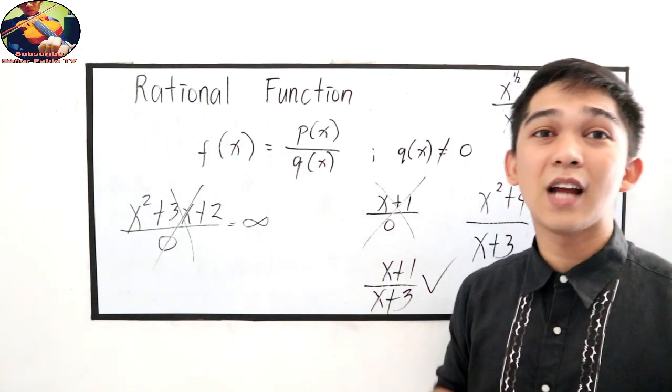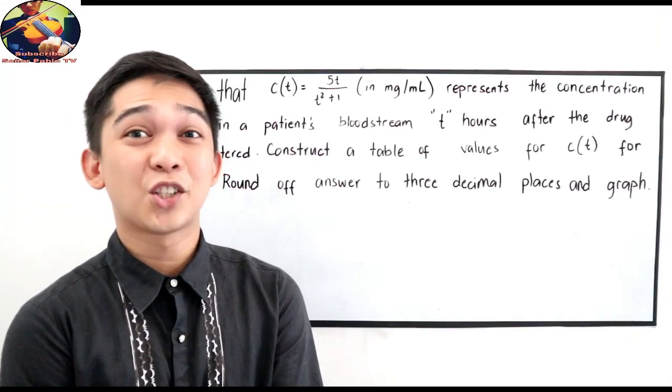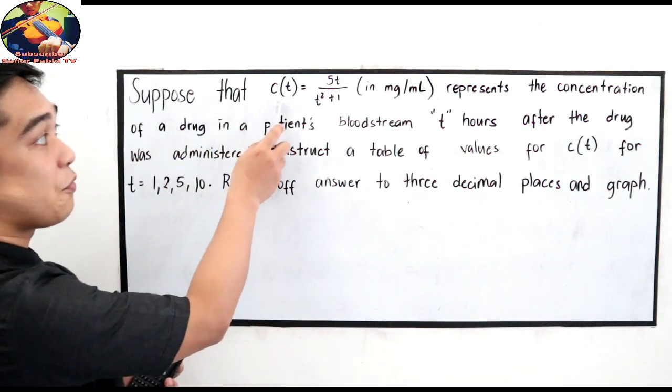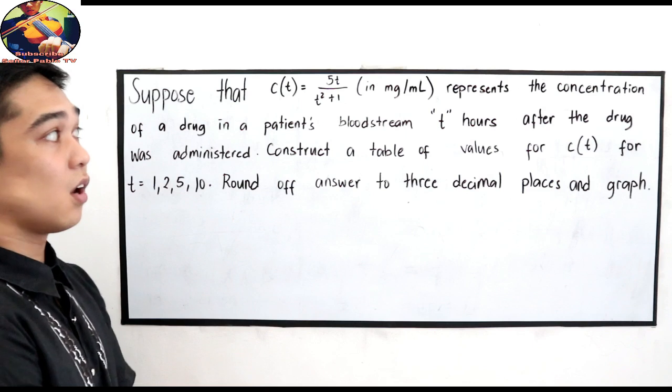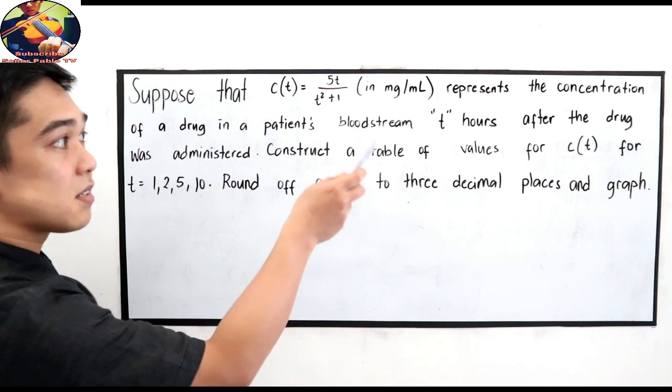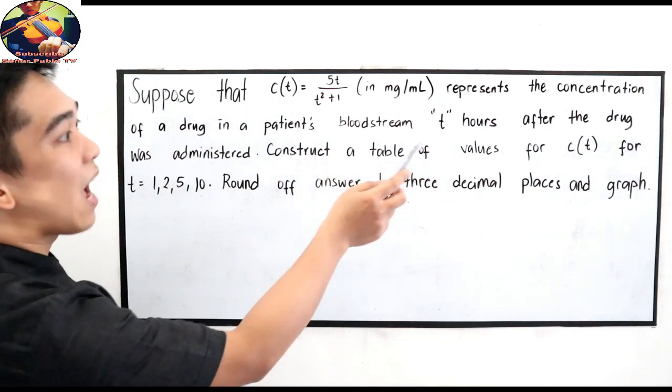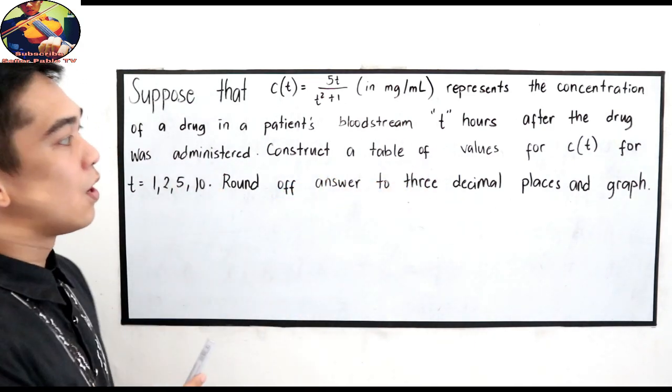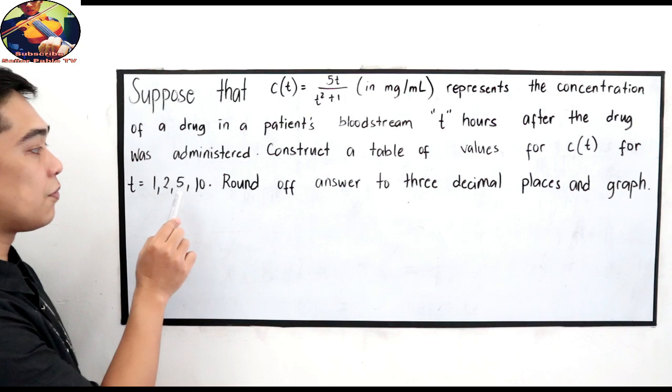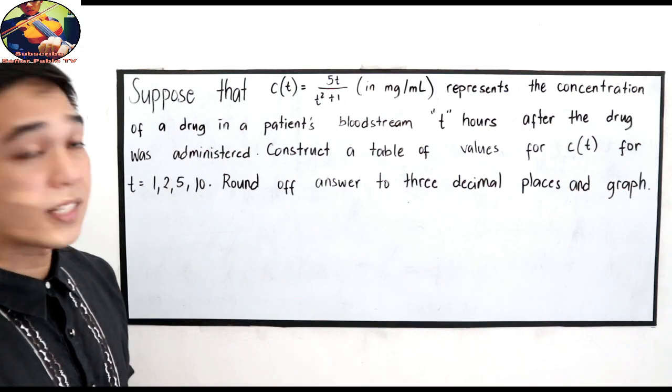Tandaan lang na ang denominator natin must not be equal to 0. And now, let's try to solve some application of rational functions. Suppose that c of t is equal to 5t all over t squared plus 1 in milligram per milliliter represents the concentration of a drug in a patient's bloodstream t hours after the drug was administered. Construct a table of values for c of t for t is equal to 1, 2, 5, 10, round off answers to three decimal places and graph.